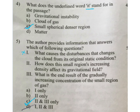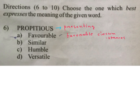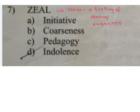From question 6 to 10, choose the one which best expresses the meaning of the given word. Word: Propitious — meaning: presenting favorable circumstances. Options A) favorable, B) similar, C) humble, D) versatile. A is the answer. Next word: Zeal — meaning: a feeling of strong eagerness. Options A) initiative, B) coarseness, C) pedagogy, D) indolence. A is the answer — initiative.